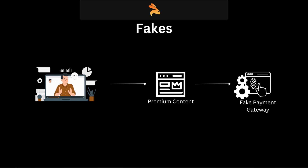This fake acts just as the payment gateway, but doesn't make a money transfer. Therefore, a fake is an alternate implementation of a dependency used when the actual one is not feasible to use.